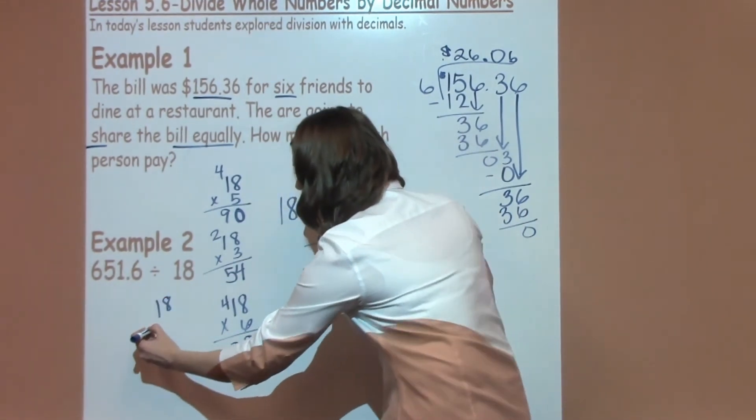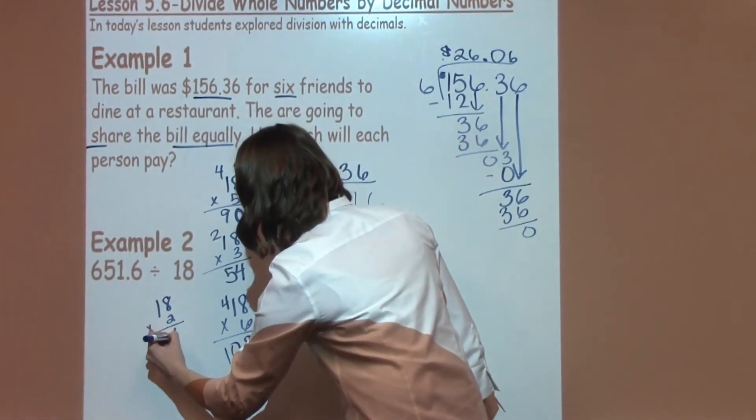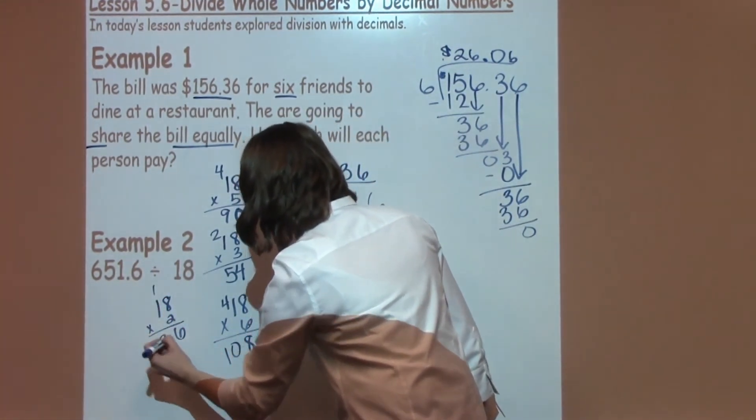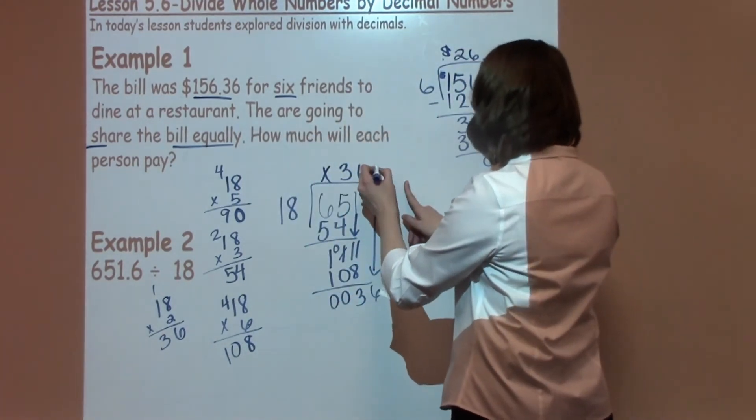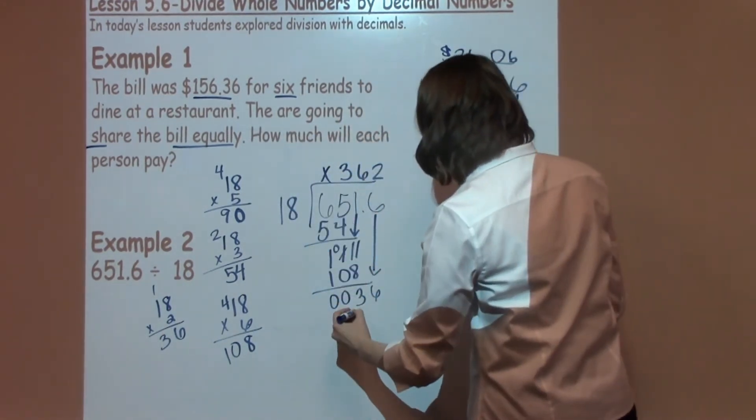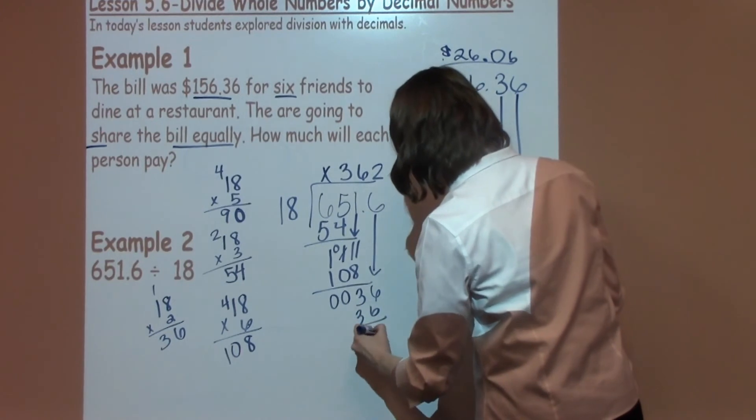With eighteen times two, I get sixteen, carry my one, for thirty-six. So it goes in there two times. Two times eighteen is thirty-six, with nothing left over.